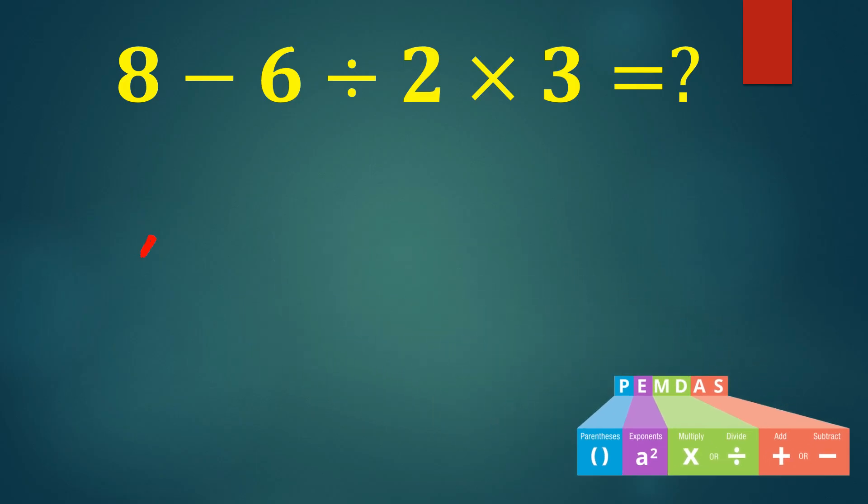Let's solve this the right way. Here we have three operations: subtraction, division, and multiplication.